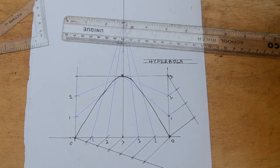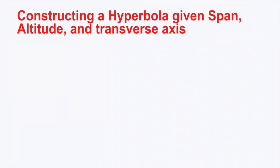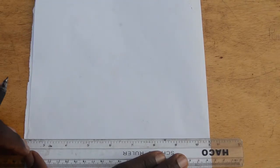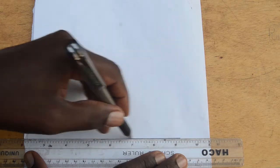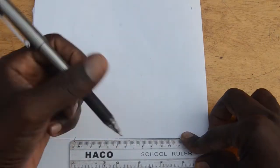We are constructing a hyperbola given the span, altitude, and transverse axis. We first draw a rectangle with its length equal to the span and width equal to the altitude of the hyperbola.